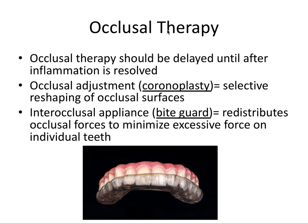Occlusal therapy should be delayed until after inflammation is resolved — it's an adjunct to phase one therapy focused on removing plaque. Afterwards, you could consider occlusal adjustment or coronoplasty, which is selective reshaping or recontouring of the occlusal surfaces, or an interocclusal appliance, also known as a bite guard or occlusal guard, which redistributes occlusal forces to minimize excessive force on individual teeth. If there's an obvious case of too much force on one tooth, you could, with patient consent, perform occlusal equilibration. These should typically be delayed until the main plaque situation has been resolved.